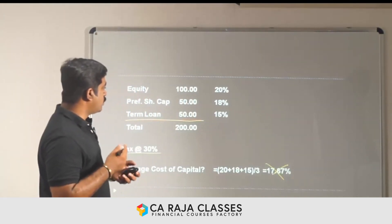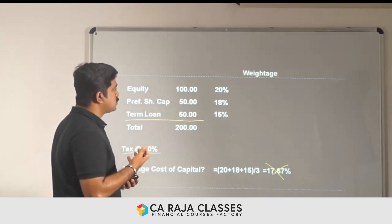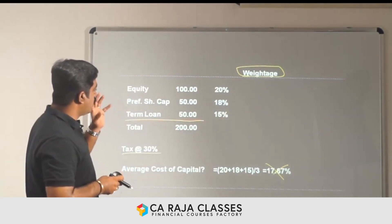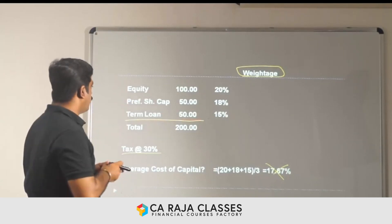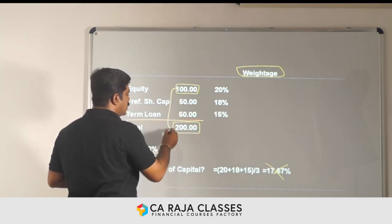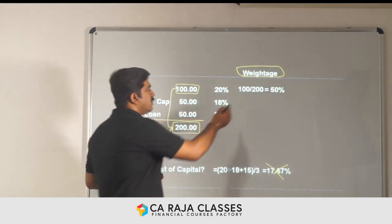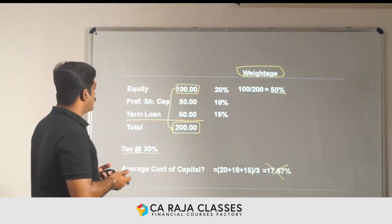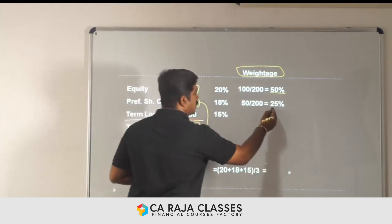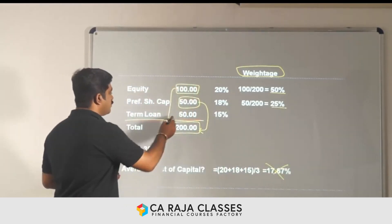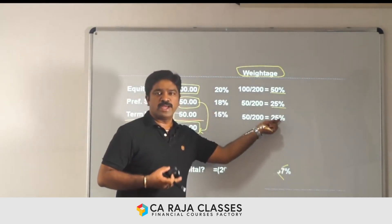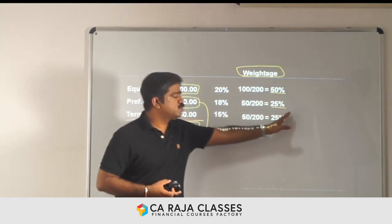What we should do is find out the cost of capital based on what is known as weightage — the proportion of each source of funds to the total. Equity is 100 million out of 200 million, so its proportion is 50%. Preferential capital is 50 out of 200, so it is 25%. And the term loan is also 50 out of 200, so it is 25%. Now we know the weightage of every source of funds.